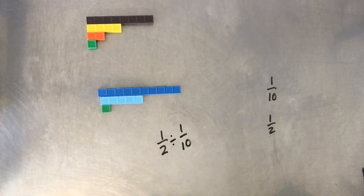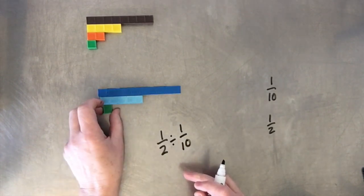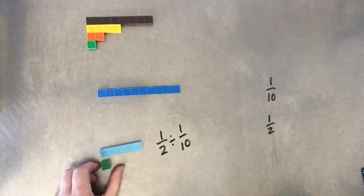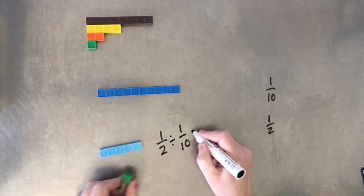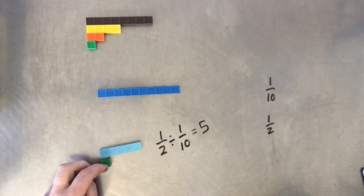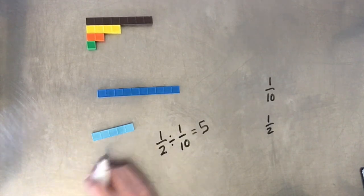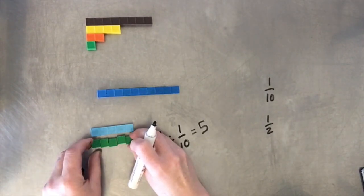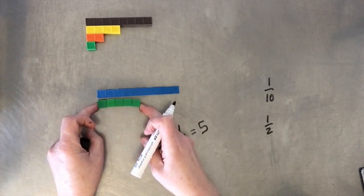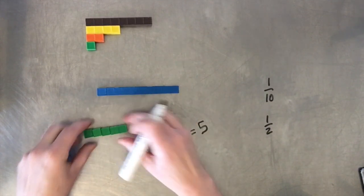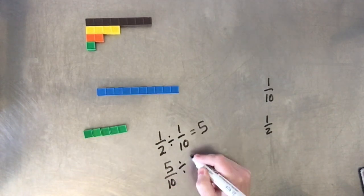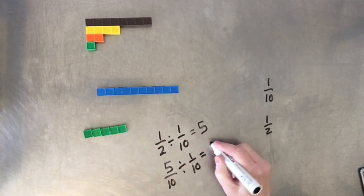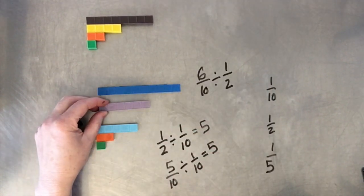Maybe I want to do one-half divided by one-tenth. This is asking: how many tenths can I count from that? It's easy to see — one, two, three, four, five. Or you could say: if I want to count tenths from this, can I change that into tenths? Sure — one, two, three, four, five. So there's five tenths; it's still one-half. And in five tenths, if I divide by one-tenth, how many of those tenths can I count? One, two, three, four, five.